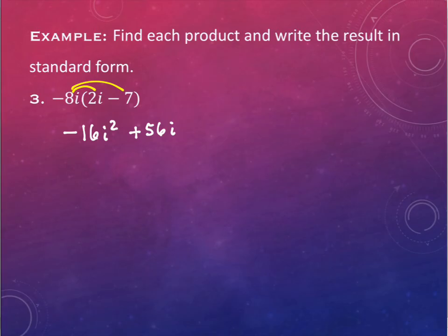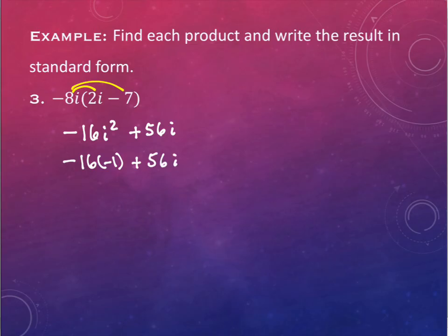There's nothing else that you can do or need to do to simplify this. However, i squared has a value of negative 1. So in the location where there's an i squared, we're going to change that i squared to negative 1. Notice the i still stays i — that doesn't change. So when I have the negative 16 and I have times negative 1, I end up getting a positive 16.